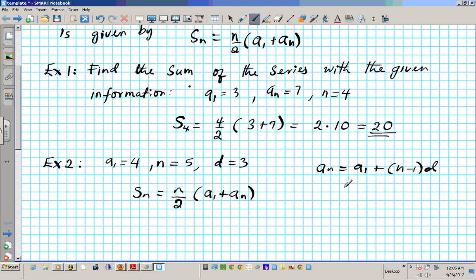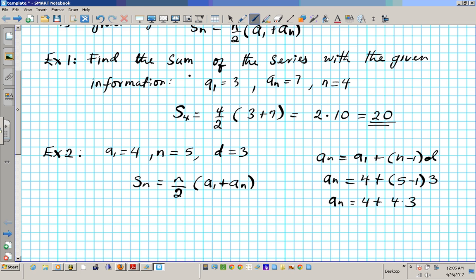So this information can help us find what an is. Let's plug in this detail and then find an. So an is what we are looking for. a1 is 4 plus (n minus 1), 5 minus 1, times the common difference of 3. an equals 4 plus 12.